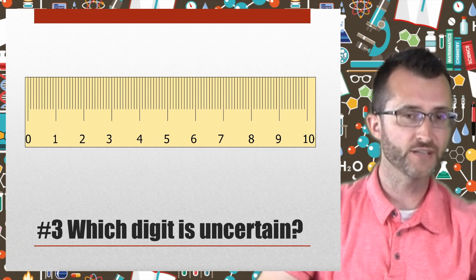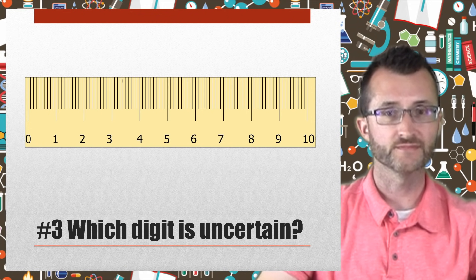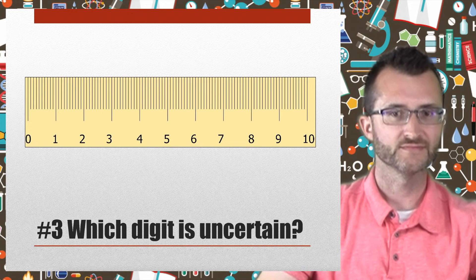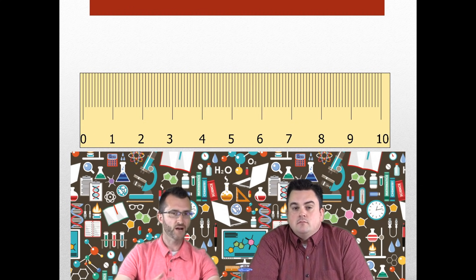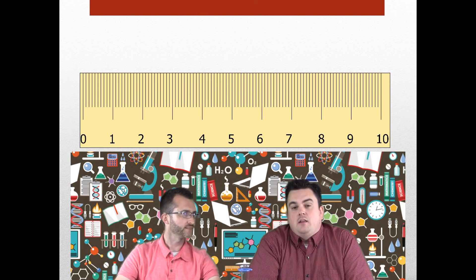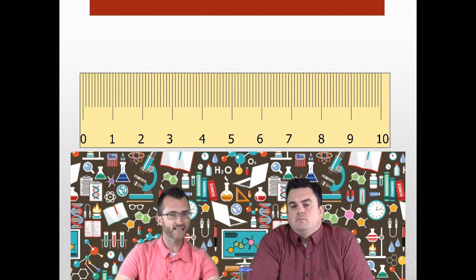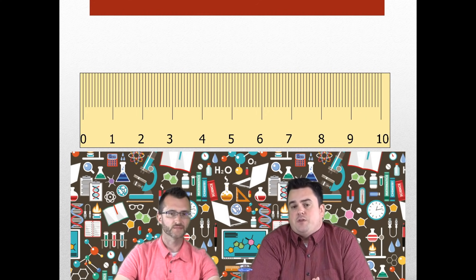Last ruler — ruler number three. Which digit is uncertain? Write that down. Lot of little marks on this one. That smallest mark would be our certain digit — what would you say? That smallest mark represents the tenths spot. Excellent. So even though it's so small and hard to estimate, what would be the uncertain digit? One smaller than the tenths has to be the hundredths, right? So the uncertain digit is the hundredths spot. You got it. When measuring the length of an object — whether it's on the line or in between the lines — we have to estimate to the hundredths spot.